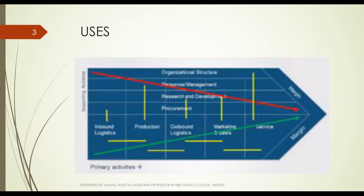The image in the diagram is a bit blurry, but the primary activities on the x-axis include five activities: inbound logistics, production, outbound logistics, marketing and sales, and services. These directly add value to the customer and consequently to the business. The secondary activities on the y-axis include organizational structures, personnel management, research and development, and procurement. These support the organization's primary activities and also affect the value of the business.